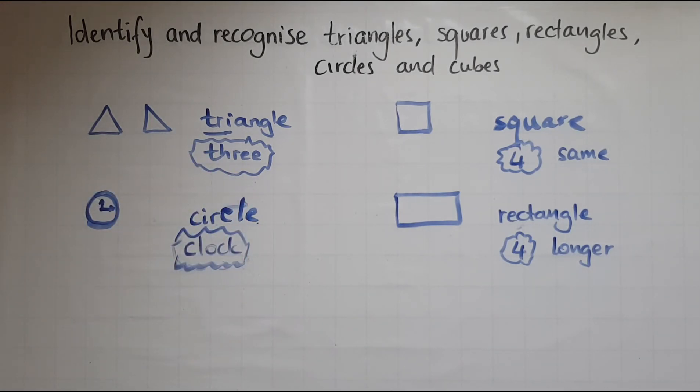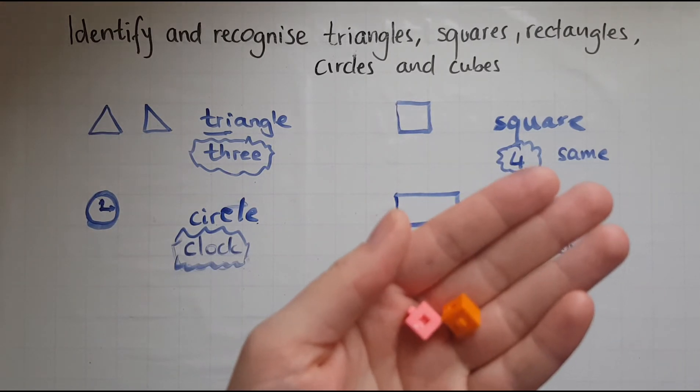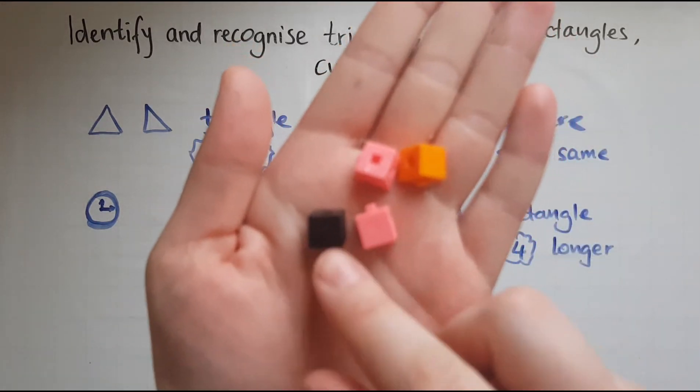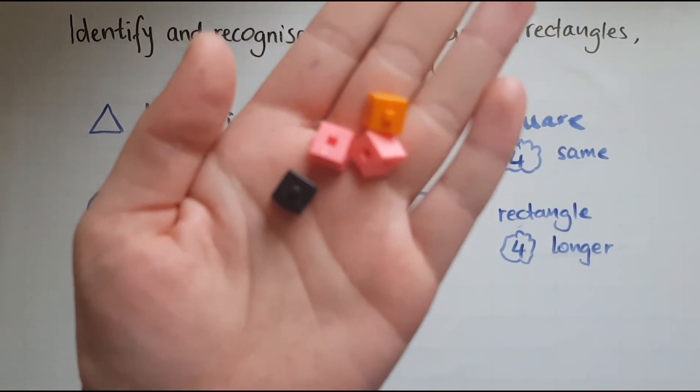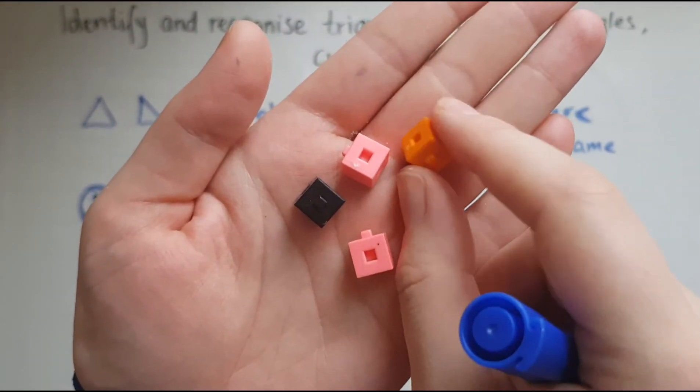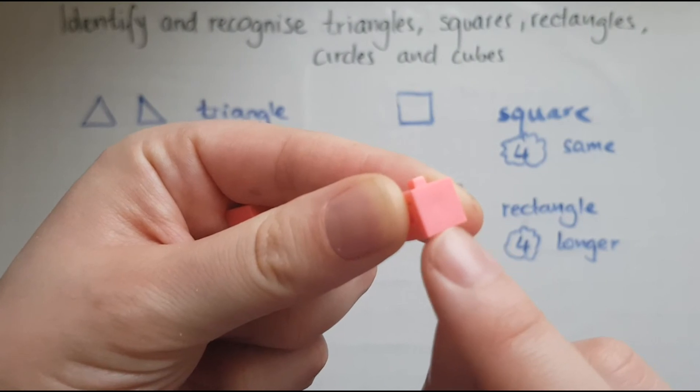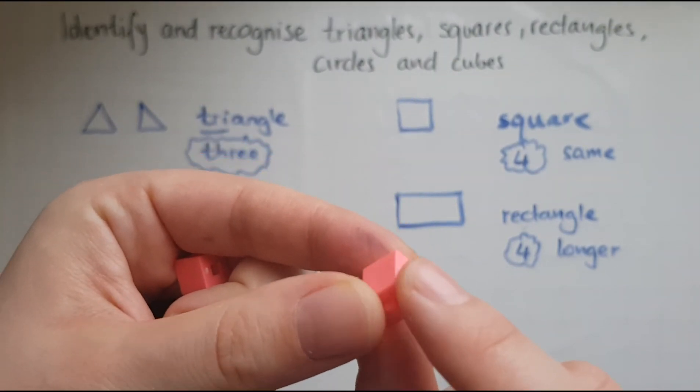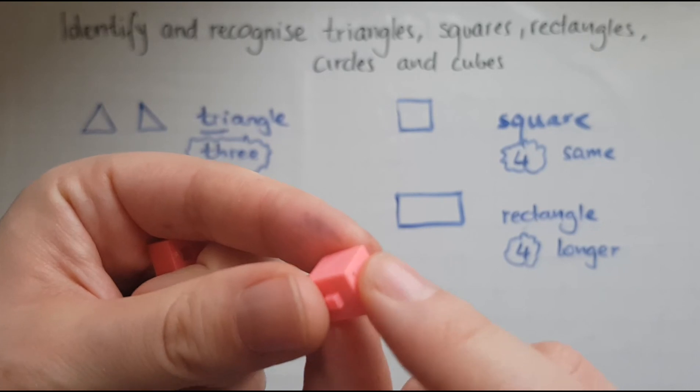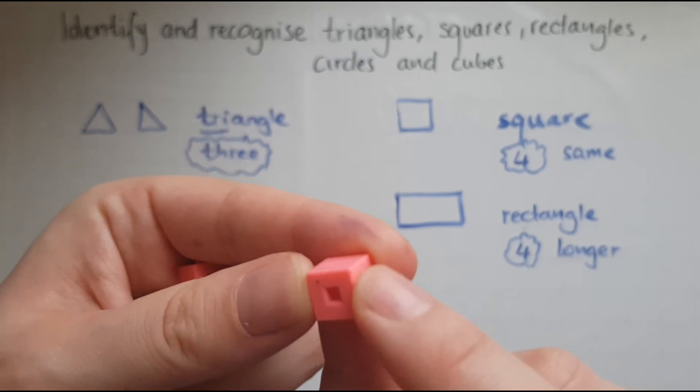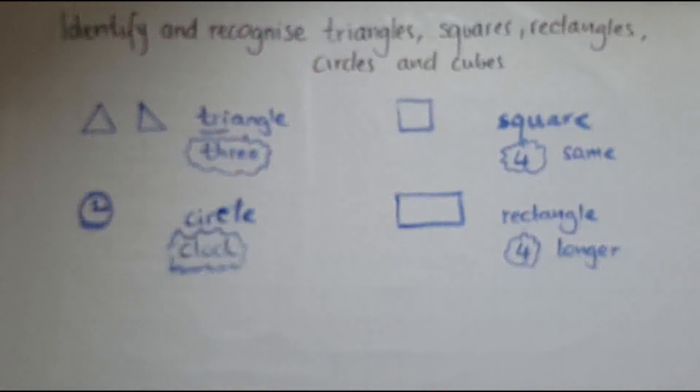So what a cube looks like is like this. We've got same length everywhere. So we call this a cube. And this is how a cube looks like.